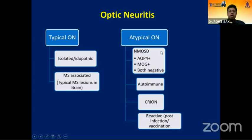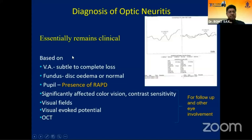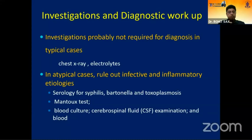For typical optic neuritis, think isolated, idiopathic, or multiple sclerosis related. For atypical, think NMO spectrum disorder (aquaporin-4 or MOG), autoimmune, or post-vaccination. The diagnosis is clinical, based on vision loss, fundus appearance, RAPD, field loss, increased latency on VEP, and OCT. We usually do a chest X-ray and electrolytes before starting steroids. In atypical cases, always rule out infective or inflammatory etiology. MRI is the single most important investigation, ideally T2-weighted with FLAIR and contrast, done in all patients but essential in atypical, recurrent cases and in children.